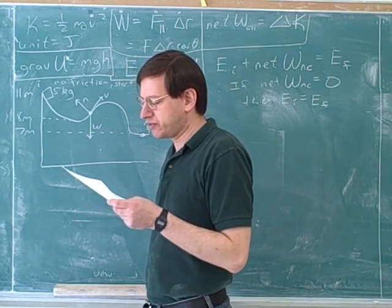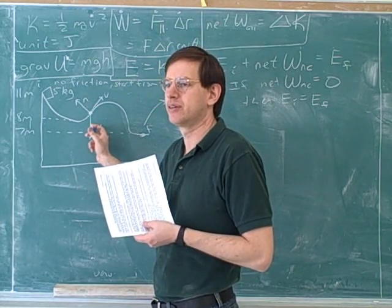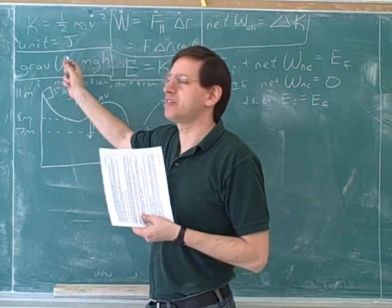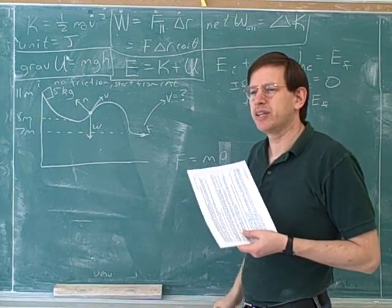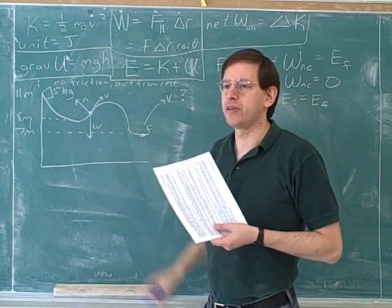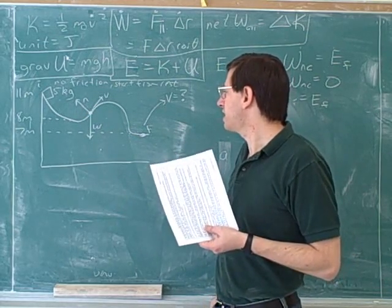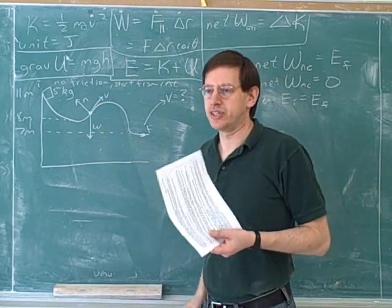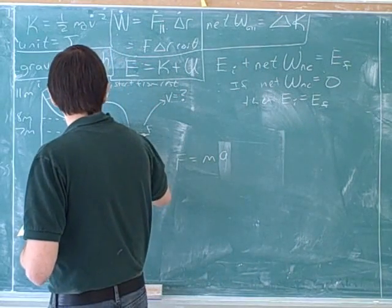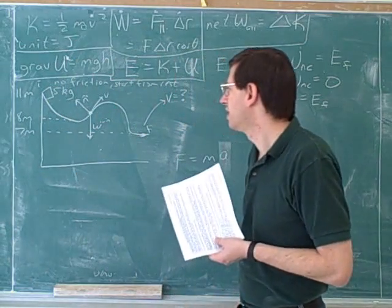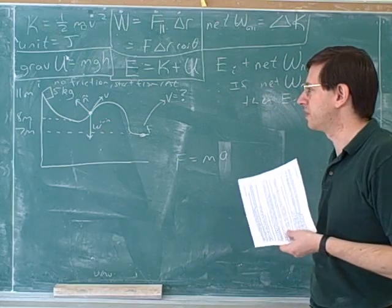Now we need to separate forces into conservative and non-conservative. The weight is conservative — we know because if it weren't conservative, it wouldn't have a potential energy. The normal force: I said that the weight and the spring force are the only conservative forces you'll see this semester. So everything besides those must be non-conservative. The weight is conservative, the normal force is non-conservative, and the velocity is not a force at all.